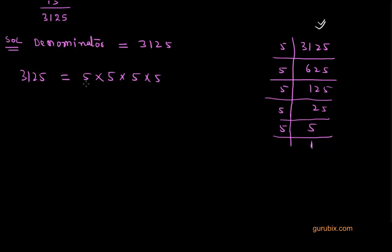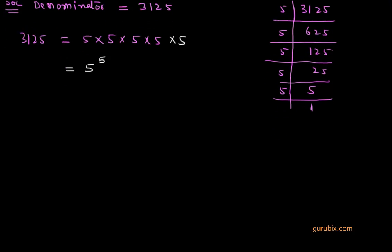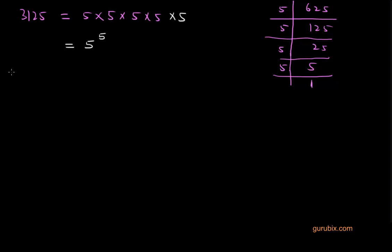Now we can write them into the product, that is 5 into 5 into 5 into 5 and 5. We can also write this product of factors of 3125 like 5 raised to 5, because 5 is multiplied 5 times. As we have studied in our theorem, if the denominator has the decimal expansion of the form 2 raised to m into 5 raised to n, then that rational number will have terminating decimal expansion. We can write this 5 raised to 5 as 2 to the power 0 and 5 to the power 5.